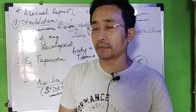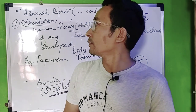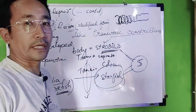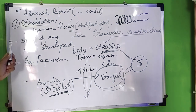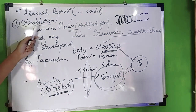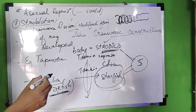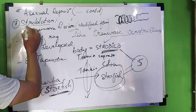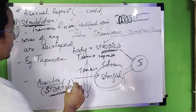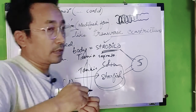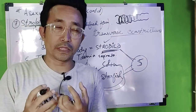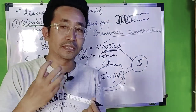I am talking about the essential production of the strobulation. Especially in the lower organisms like cylindrate, I am talking about the larvae, because there are larvae.